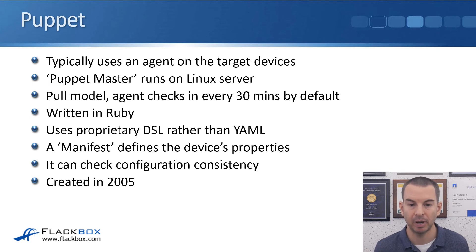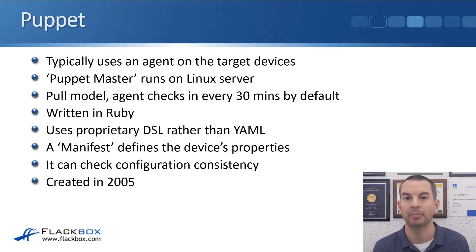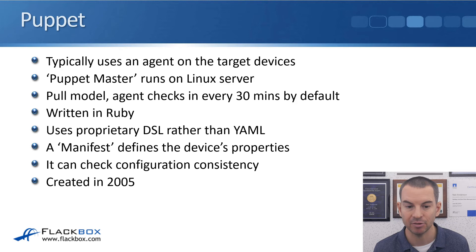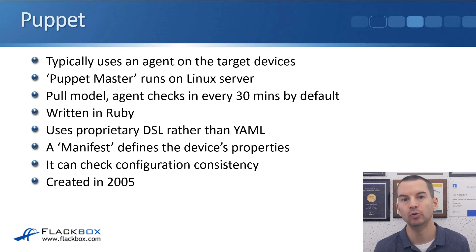Next we have Puppet. Puppet typically uses an agent on the target devices — it is possible for Puppet to be run agentless, but typically it does use an agent, meaning you need a software plugin on the devices you're managing. For the CCNA exam, Puppet is an agent-based option. The server used to control everything is called the Puppet Master, which runs on a Linux server. Unlike Ansible, which uses a push model, Puppet uses a pull model — the devices check in with the Puppet Master and pull their configuration from there. By default, the agent checks in every 30 minutes.